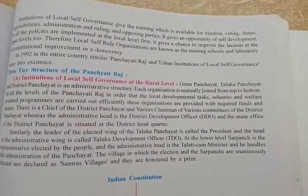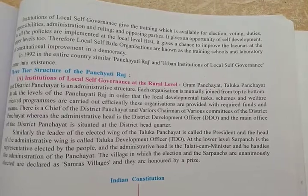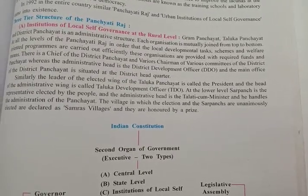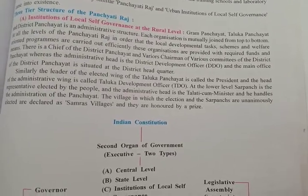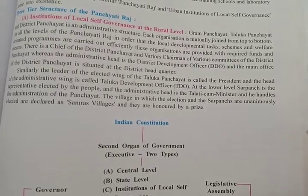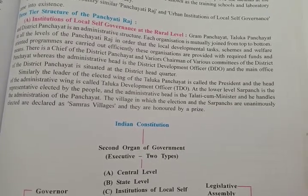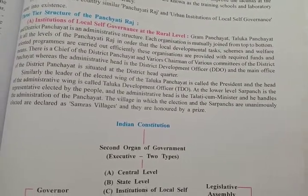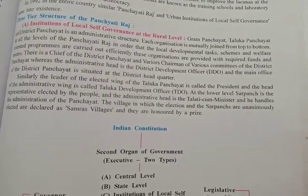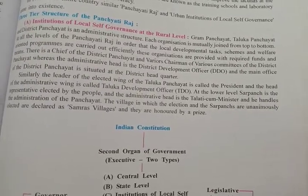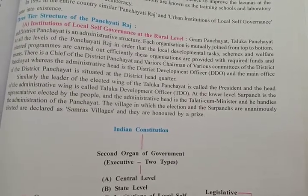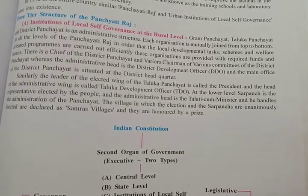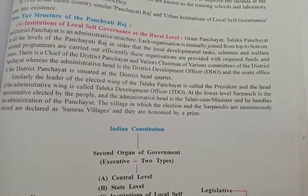In 1992, Panchayati Raj and urban institutions of local self-governance came into existence across the country. The three-tier structure of Panchayati Raj includes gram panchayat, taluka panchayat, and district panchayat — all part of the administrative structure. Every organization maintains a mutual joint top-to-bottom structure. At each level, local development tasks, schemes, and welfare-oriented programs are carried out efficiently, and these organizations are provided with required funds and means.